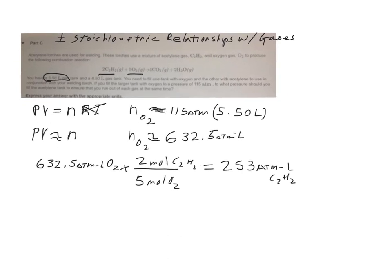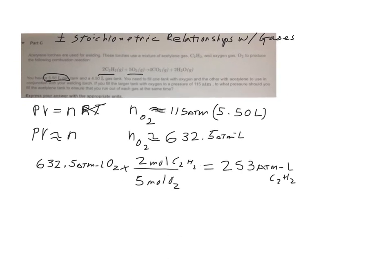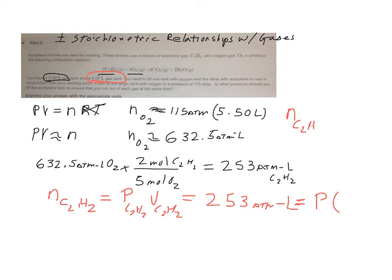Now, the problem with that is this problem is wanting to know the pressure. It gave me a volume right here for my acetylene tank of 4.50 liters. I know my moles of acetylene now. I know my moles of acetylene are equivalent to my pressure of my acetylene times the volume of my acetylene and I know that that pressure times volume is 253 atm liters and I'm wanting to solve for the pressure. They told me that the volume was 4.50 liters in the problem.